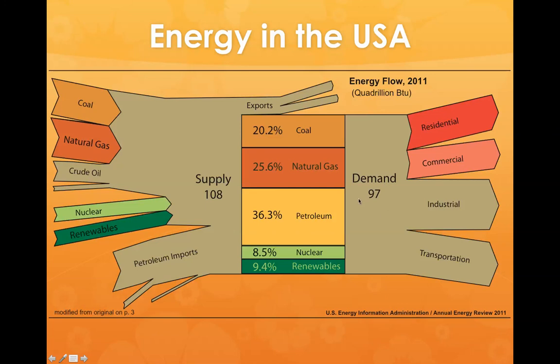The United States currently produces more energy than it actually demands. I've highlighted two of the four sectors of energy demand. The residential and commercial sectors represent energy demand for the built environment — residential buildings like your homes, and commercial buildings such as schools, hospitals, and retail stores. Industrial energy demand is tied to larger-scale materials production, materials processing, and fuel processing. And then at the bottom we have transportation.